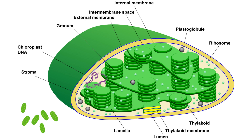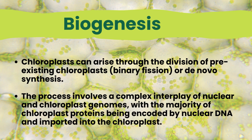Biogenesis of chloroplasts encompasses two fundamental pathways: binary fission, where existing chloroplasts divide to give rise to new ones, and de novo synthesis, involving the creation of chloroplasts from scratch. This intricate process involves a delicate interplay between the nuclear and chloroplast genomes. A significant proportion of essential chloroplast proteins, crucial for structure and function, are encoded by nuclear DNA and later imported into the chloroplast. This orchestrated effort ensures the proper development and maintenance of chloroplasts within plant and algal cells.